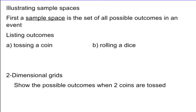But first, we want to learn how to illustrate a sample space. A sample space is a set of all possible outcomes in an event. When we're talking about an event, we're talking about the probability of tossing a coin, rolling a dice, or picking marbles out of a bag — something controlled where we know what our possible outcomes could be.